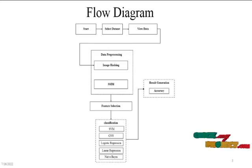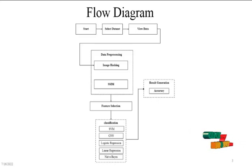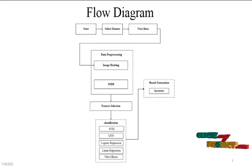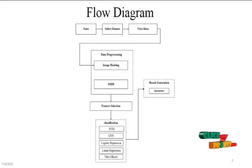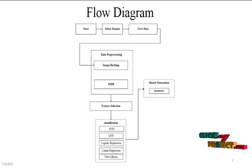Then it moves into feature selection. In feature selection we select the independent variable and dependent variable. After selecting independent and dependent variables, we split the dataset into training dataset and testing dataset for cross-validation purposes.